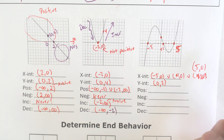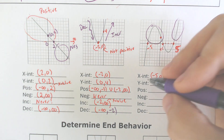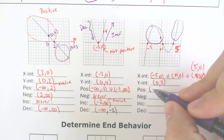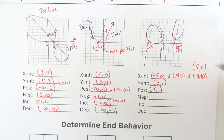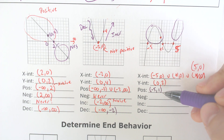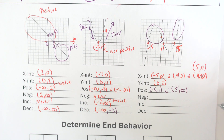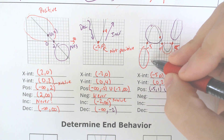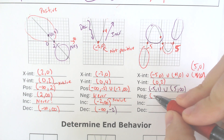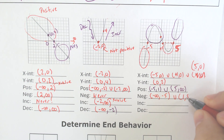This graph is positive in two different intervals — both where we're above the water. It is positive from negative 5 to positive 1, using parentheses not brackets since we don't include the intercept points. And from positive 5 to infinity, since we're going to the right. All of these are x values. It is negative from negative infinity to negative 5, and from 1 to 5 — those are the intervals where the graph is below the water.